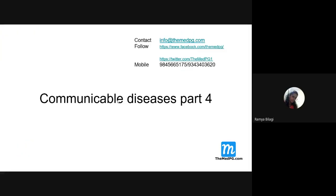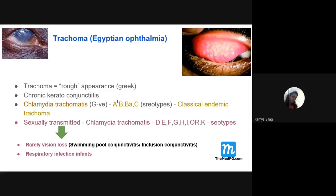This is the continuation of the communicable diseases part 4. Today I'll discuss a few other communicable diseases. Very important is trachoma. It is also called as Egyptian ophthalmia. The word trachoma means 'rough' — something that appears rough. It is a Greek word.